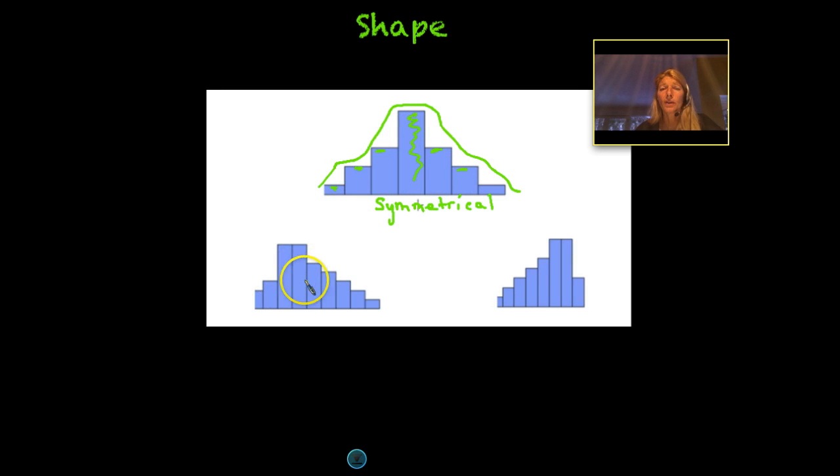And this one here on the left, this one's a little bit different. If you notice that the data, we still have this glob here in the middle, but then we start to step down a little bit less frequency, a little bit less, a little bit less. And then we have a tiny bit over here. What we call this is positively skewed.